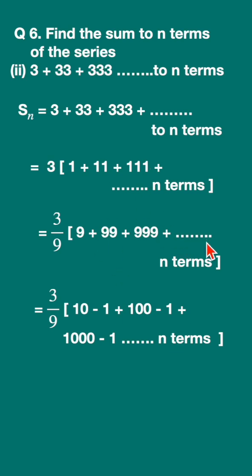This is equal to 3 upon 9 bracket. 9 I'm going to write as 10 minus 1, 99 as 100 minus 1, 999 as 1000 minus 1, up to n terms.